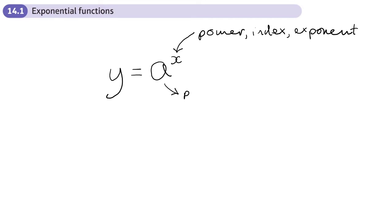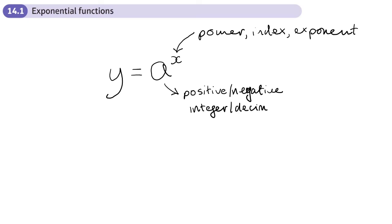The value a could be positive, negative, a whole number, or a decimal. What we're doing is taking that number to a power, and that power changes as x changes.